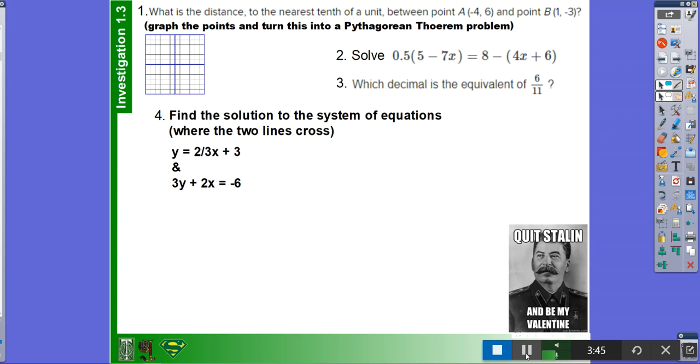I'm Felix, and I'm going to be solving this system of equations problem. So you look at the equations. Y equals two-thirds x plus 3, and 3y plus 2x equals negative 6. You see that you have y in this problem, and you have equals y in this problem. So that means you can substitute.